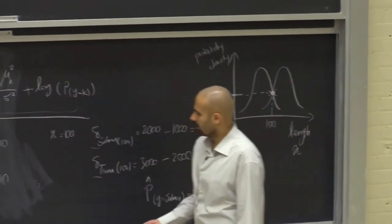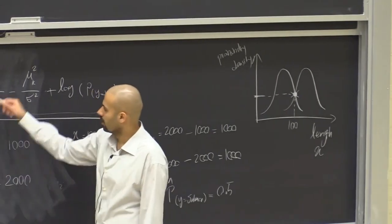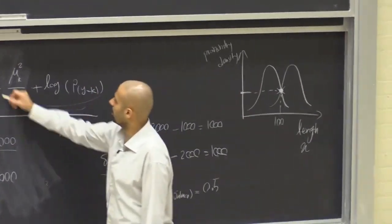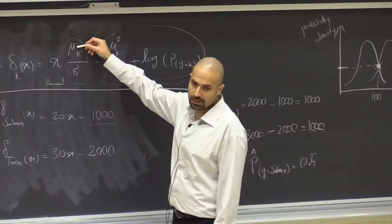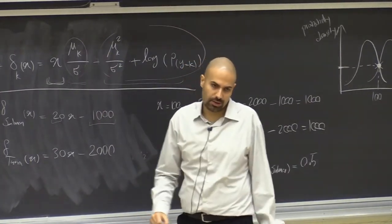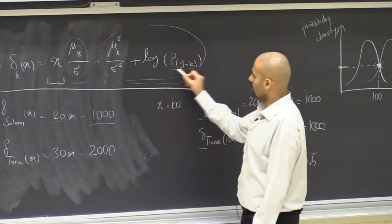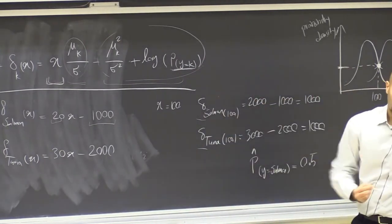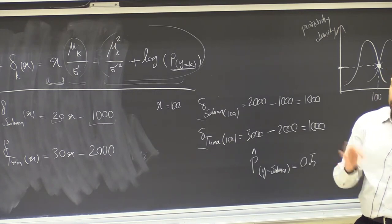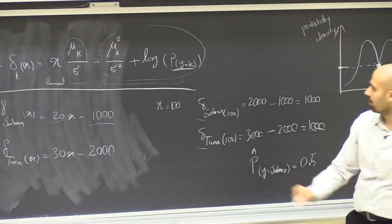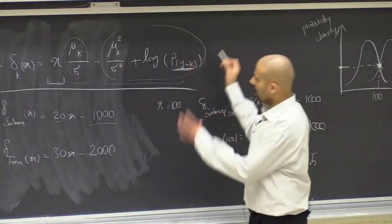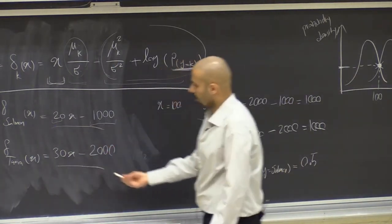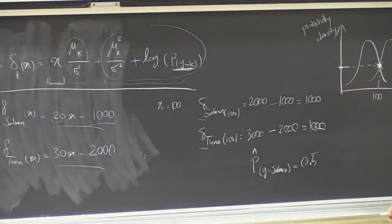The coefficient 20 comes from the average length of salmon divided by standard deviation. The constant 1000 includes the prior — for instance, if salmon are twice as likely as tuna in this region, that's a probability of 2/3, whose log contributes to the score. All these complicated formulas boil down to a linear form, which we can just plug numbers into to get scores and classify based on the higher score.